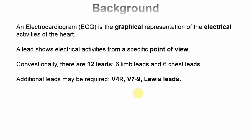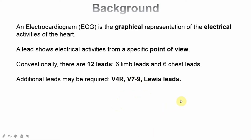Conventionally there are 12 leads — six limb leads and six chest leads — but you can have more. For example, V4R shows the right surface of the heart; V7, V8, and V9 show the back of the heart; and Lewis leads show the atria. There are different videos on those topics. For now, let's focus on first degree heart block.